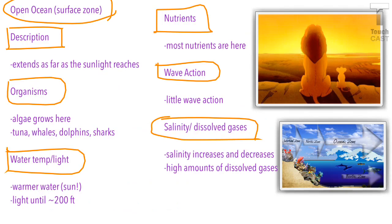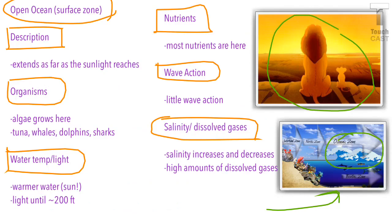Our next zone is technically two zones, even though they're both called open oceans. The first one is the surface zone. It extends as far as the light touches — everything the light touches, that's the surface zone. Organisms here include algae, tuna, whales, dolphins, and sharks — all the big things you think of when you think of the ocean. It has warmer water because of the sunshine, and sunlight reaches basically down to about 200 feet. Most of the nutrients are there, very little wave action, and salinity increases and decreases depending on location.